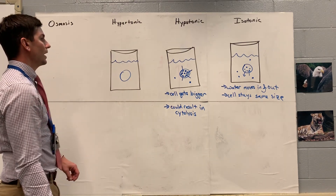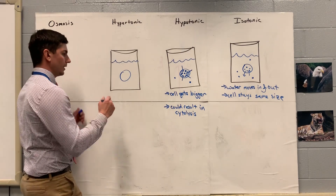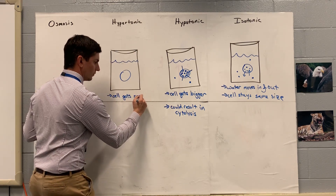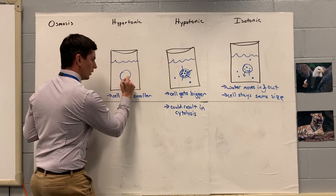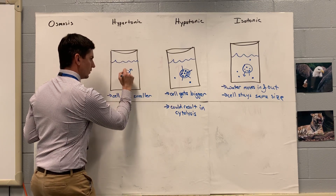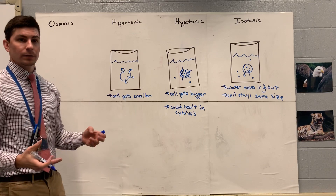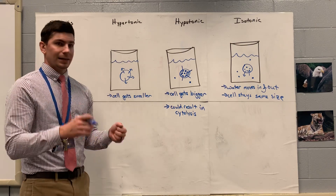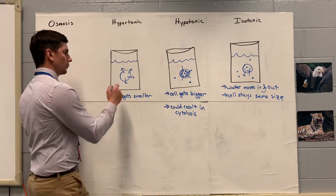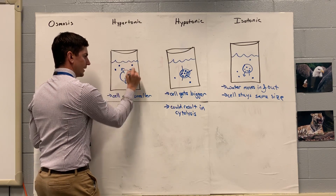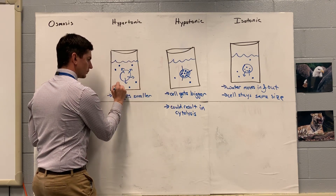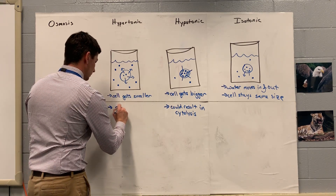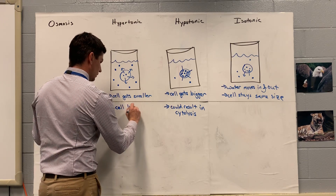Our last one here for hypertonic — it's just going to be the opposite of that. The cell gets smaller; in other words, it shrivels. Water is exiting the cell. This is what happens to slugs when you put salt on them — they have a lot of water on the inside, but the salt is actually going to draw out the water. So there's going to be a lot of solute on the outside and very little on the inside. The cell loses water.